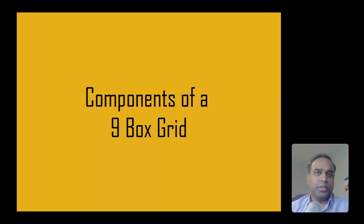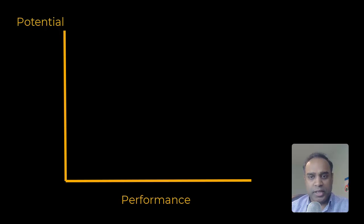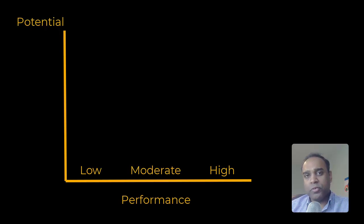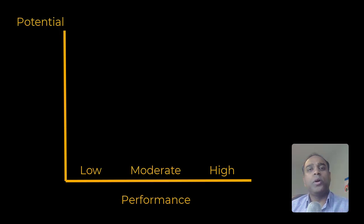What is in a nine-box grid? What are its components? There are two axes of measurement. On the x-axis, typically, is the past performance of the employee. On the y-axis, we have the future potential. For performance, an employee will be placed into one of three categories or levels based on performance reviews — for example, low, moderate, and high. The employee will fit into either the low, moderate, or high performance bucket. It could also be categories like not meeting job expectations, meeting job expectations, or exceeding job expectations — or underperforming, performing, outstanding performance. You can customize the three levels or categories of performance however you want.